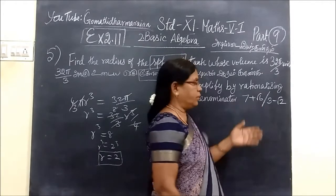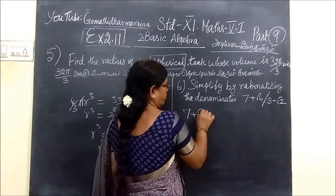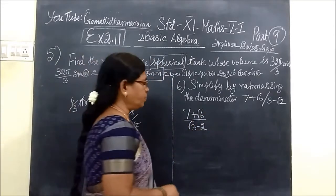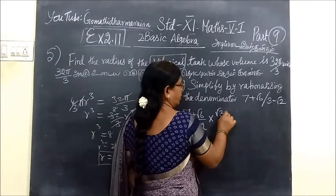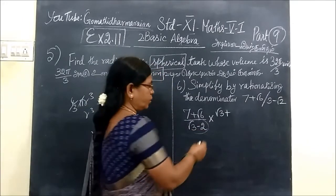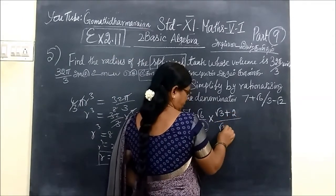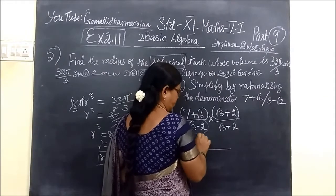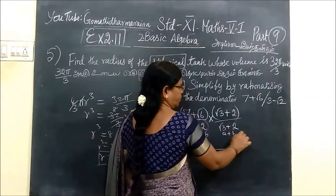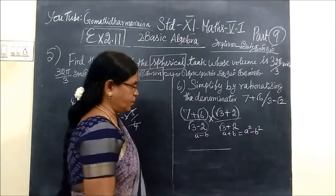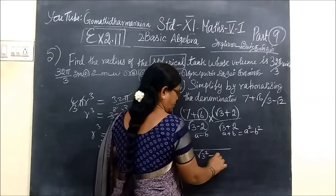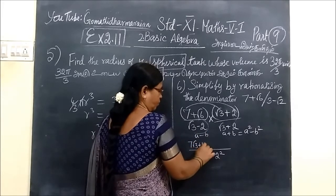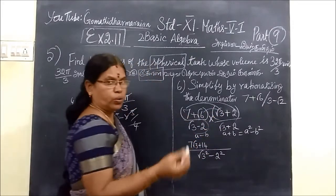And the next question is simplify by rationalizing the denominator. This type of question you have already seen. So rationalizing the denominator is root 3 minus 2 by root 3 plus 2. Now you have to multiply these two. This is of the form A plus B into A minus B. For this you are using A squared minus B squared. So root 3 squared minus 2 squared.